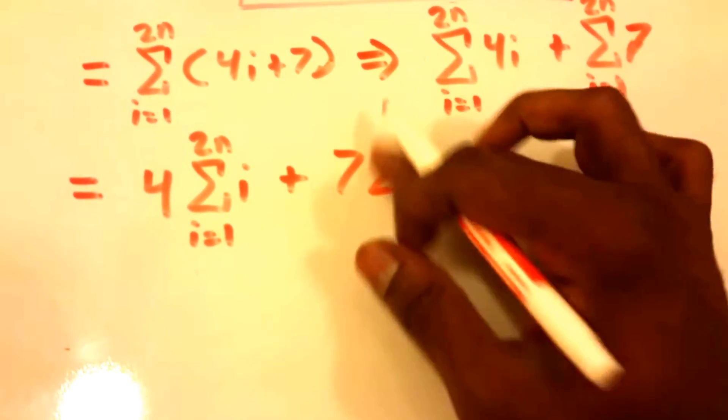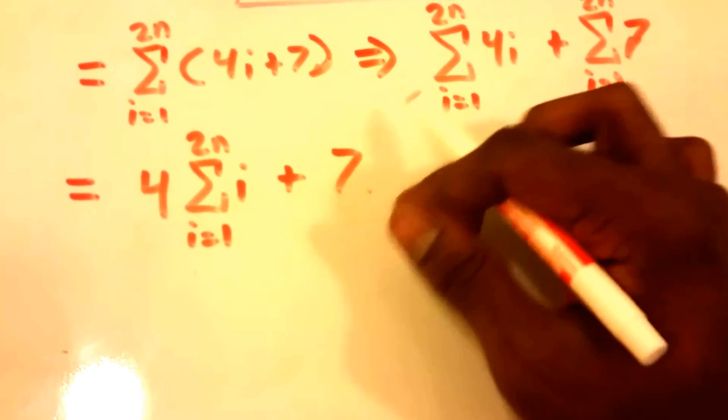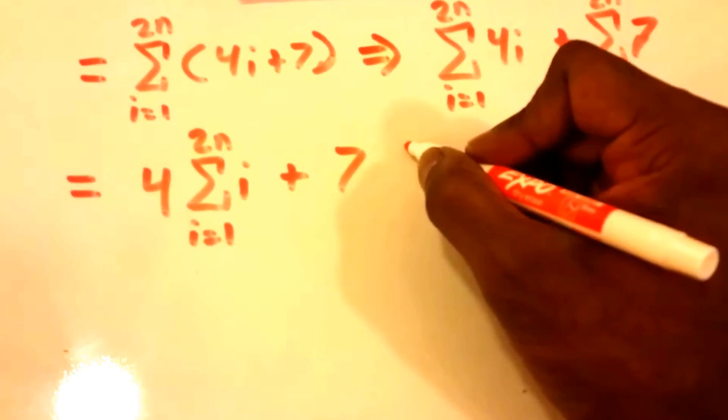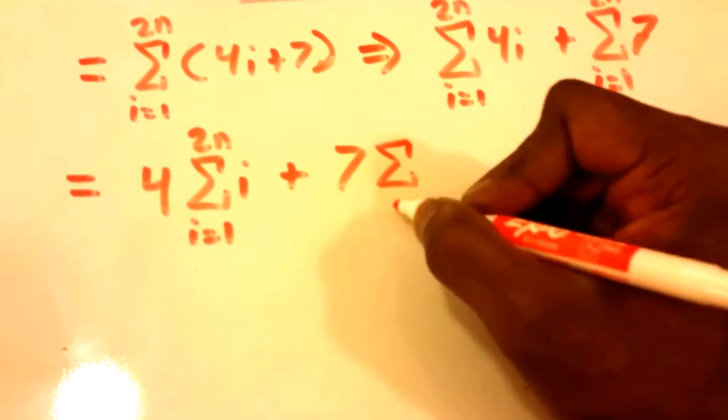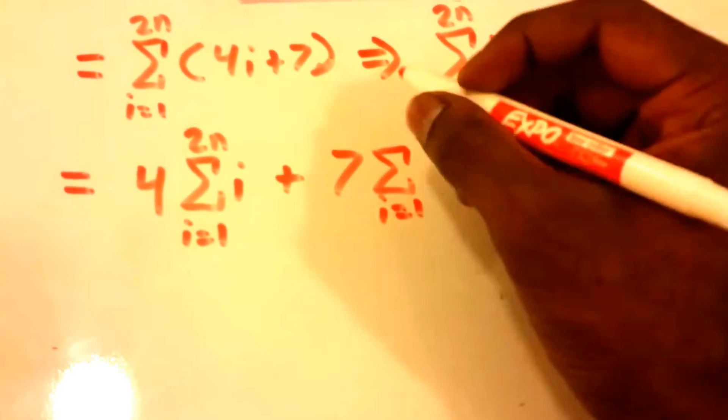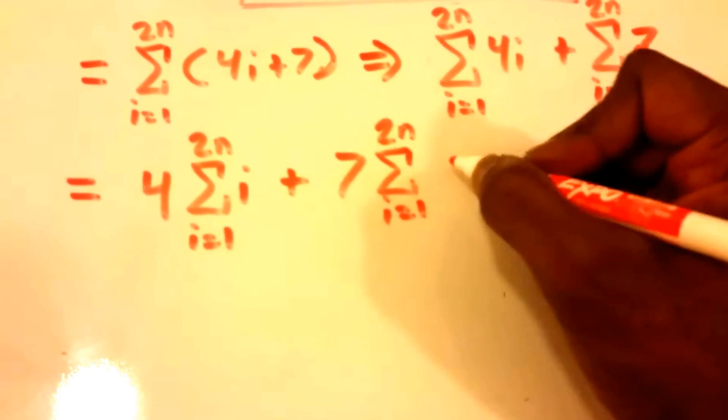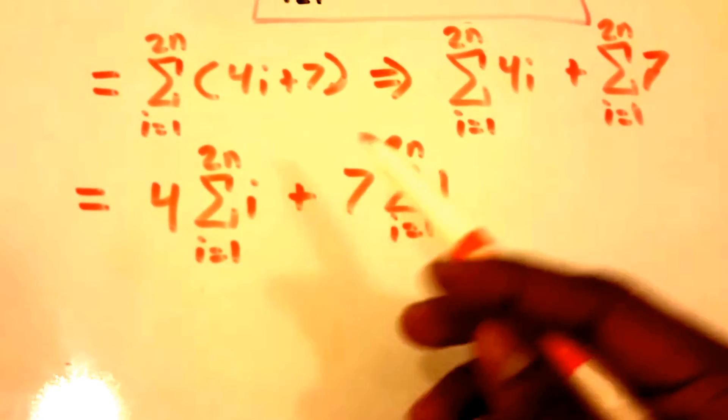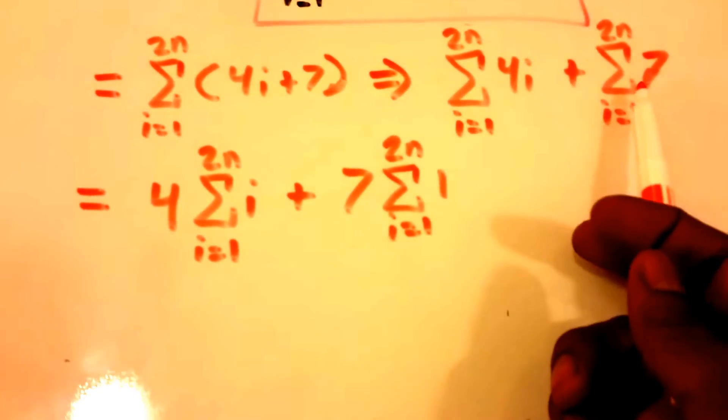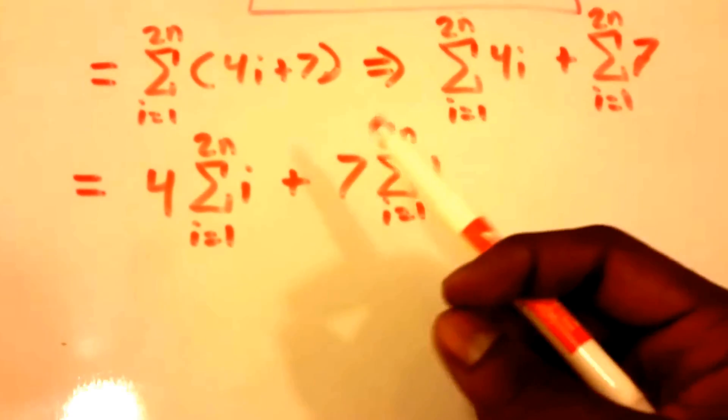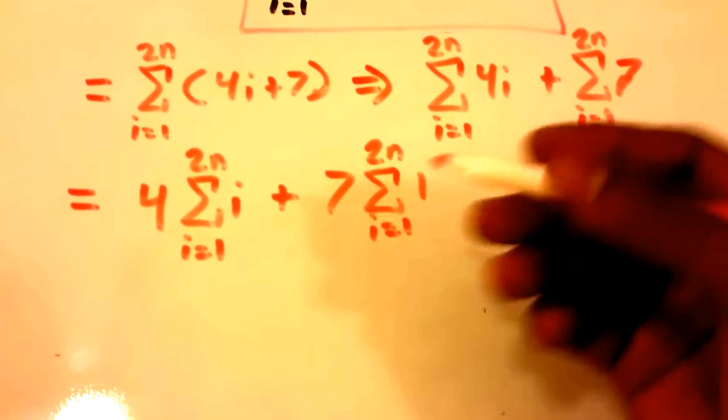Let me rewrite that. 7 times the summation from i equals 1 to 2 times n of 1. That's just because we took out the 7 from that summation up here.